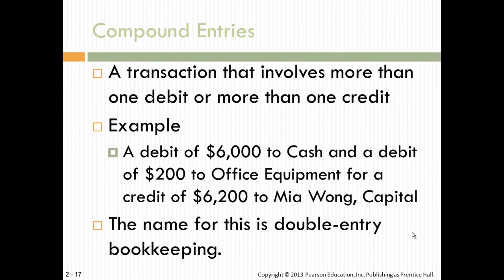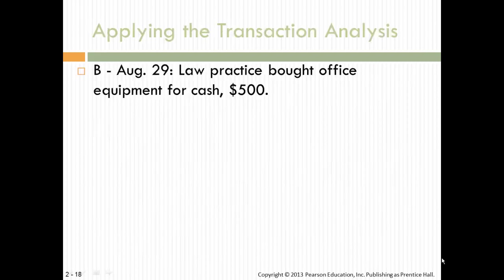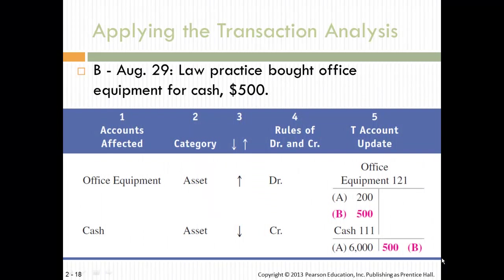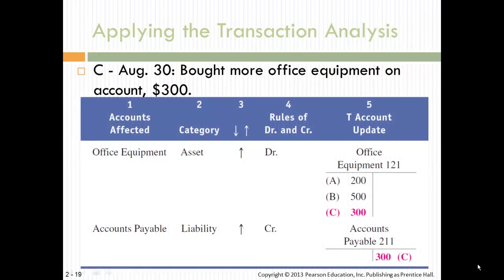Notice that some transactions will have more than one debit or credit — that is double-entry bookkeeping. On August 29th, $500 of equipment was bought for cash. An asset went up and an asset went down, so the net change to assets is zero — everything happened on one side of the accounting equation. In another transaction, equipment was bought on debt, affecting both sides: a debit went up and a credit went up because accounts payable has a normal credit balance.